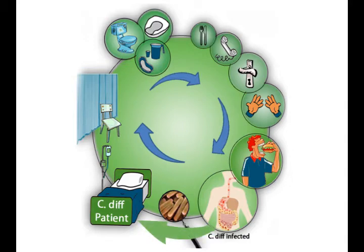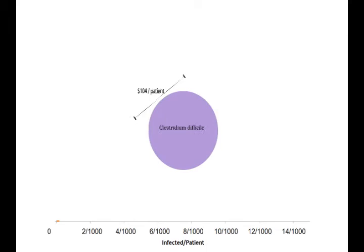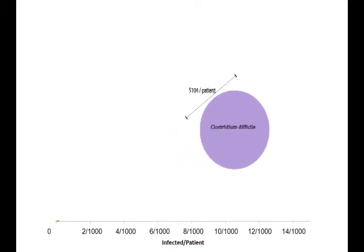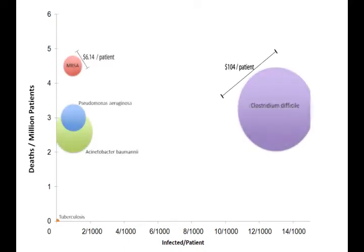To get an idea of the severity of C. diff, let's compare it to some other hospital-acquired infections. Each patient who enters the hospital incurs an extra $104 due to C. diff, and insurance no longer covers these costs. Clostridium difficile infects 13 of every 1,000 patients and kills 25 of every 1,000 infected.